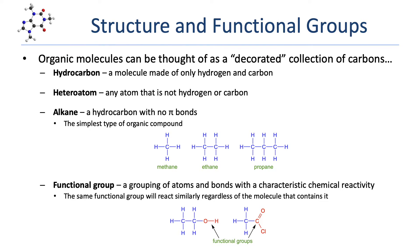Here are the smallest three alkanes: a one-carbon alkane, methane, which you're familiar with as the main component in natural gas; a two-carbon alkane, ethane; and then a three-carbon alkane, propane, which you're probably familiar with from backyard barbecue grills.